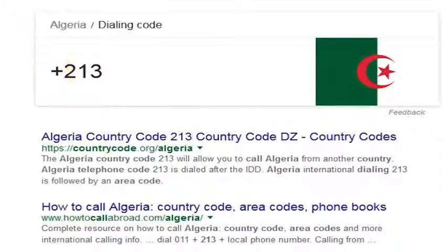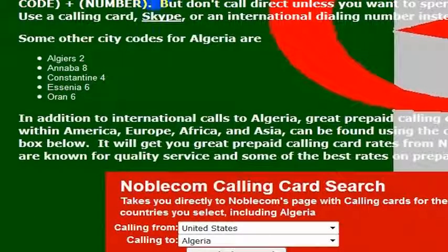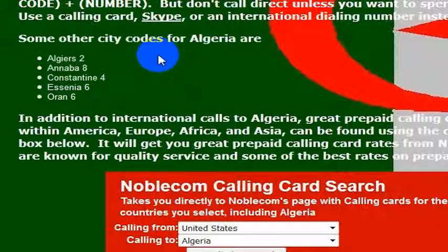213 is the calling code for Algeria. Once you have dialed 011 plus 213, then you can put in the number and you can call Algeria directly.